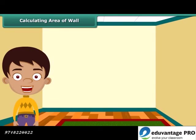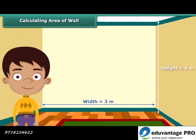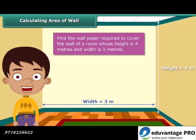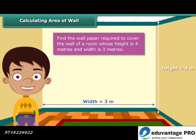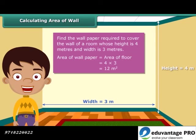Now that we know how to calculate area, let us solve a question based on the concept. Each wall of Nidhi's room is 4 meters high and 3 meters wide. She wants to cover one of the walls with wallpaper, and wants to know how many square meters of wallpaper will be required. The area of the wallpaper required will be the same as the area of the wall. The area of the wall is 4 meters multiplied by 3 meters, which is 12 square meters.